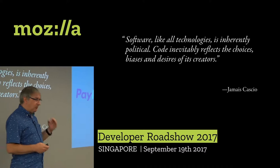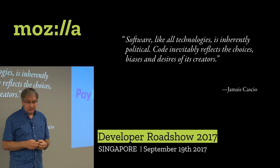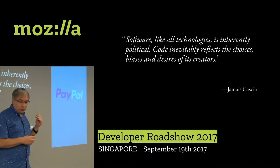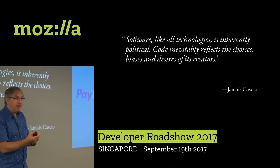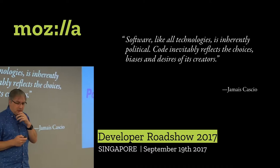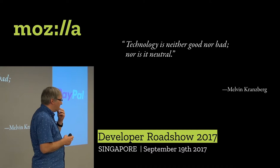Technology comes with assumptions because technology is made by humans. Software, like all technologies, is inherently political. Code inevitably reflects the choices, biases, and desires of its creators. I'm not saying we're bound to the technology — we can use technology for different means than what it was invented for — but you just need to be aware of where those assumptions are. Technology is neither good nor bad, nor is it neutral.